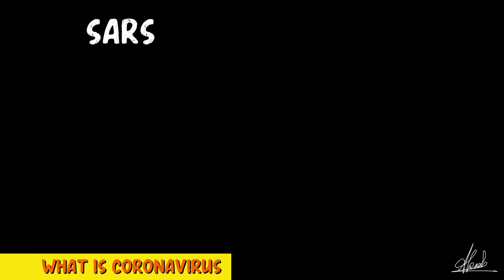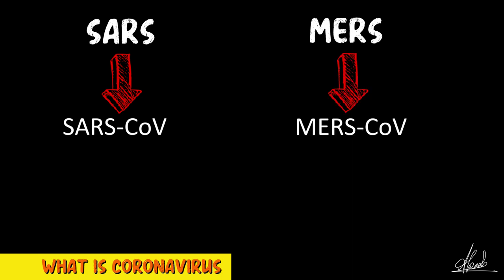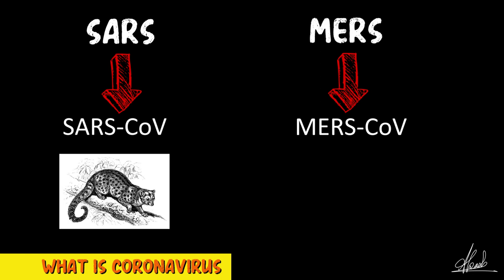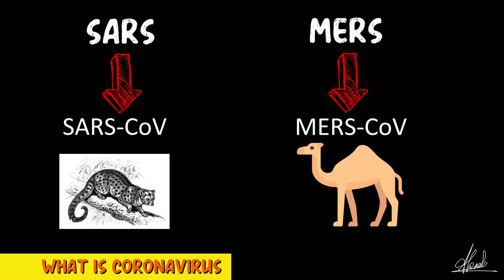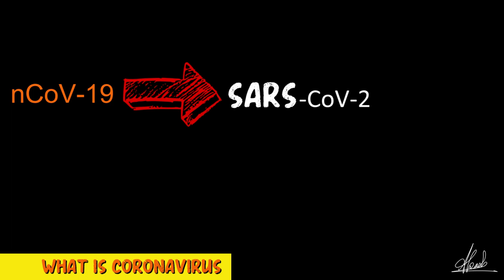Looking back, SARS and MERS are caused by viruses called SARS-CoV and MERS-CoV respectively. Detailed investigations found that these viruses were transmitted to humans from civet cats in the case of SARS-CoV, and from camels in the case of MERS-CoV. The novel coronavirus, called nCoV-19, is also referred to as SARS-CoV-2 because it is quite similar to the SARS coronavirus, which caused the SARS epidemic in 2002.